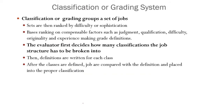The next method is the classification or grading system. Classification groups sets of jobs together, which are then ranked by the difficulty or sophistication involved, based on compensable factors such as judgment, qualification, difficulty, originality, and experience. The evaluator first decides how many classifications the job structure has to be broken into, then writes definitions for each class. After the classes are defined, jobs are compared with the definition and placed into the proper classification.